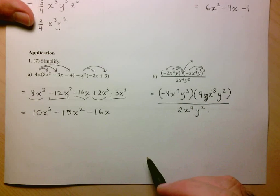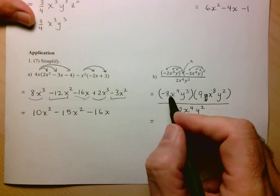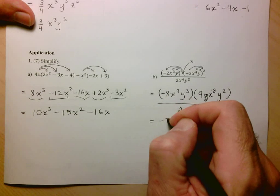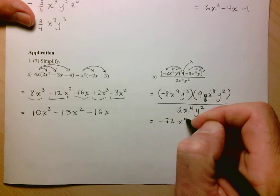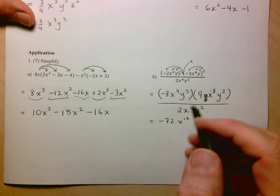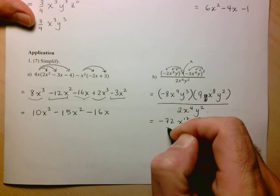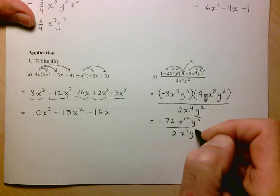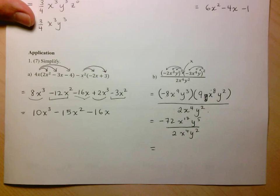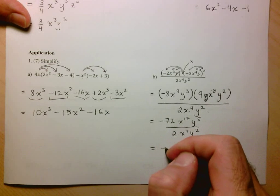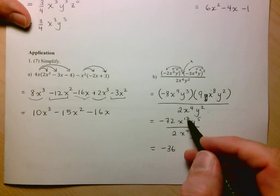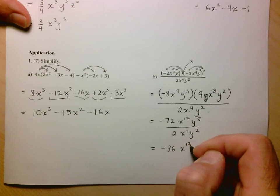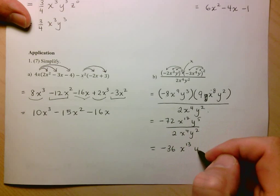Now I'm left with multiplications and divisions. I'll first multiply the numerator, then do the division last. Negative 8 times positive 9 is negative 72. x to the 9 times x to the 8: 9 plus 8 is 17. y cubed times y squared: 3 plus 2 is 5. All divided by 2x to the 4 y squared. Negative 72 divided by 2 gives negative 36. Same base division: 17 minus 4 is 13. And 5 minus 2 gives y cubed.